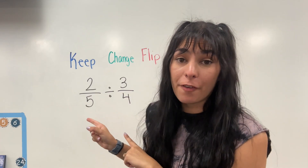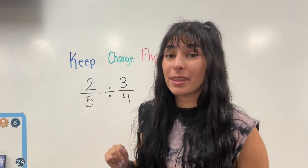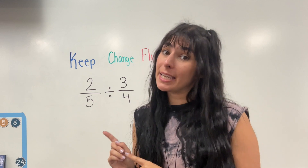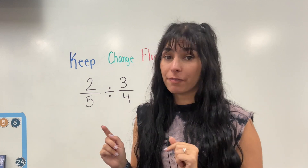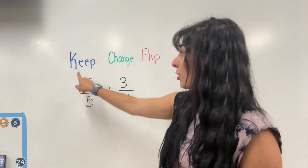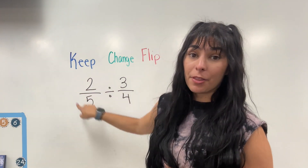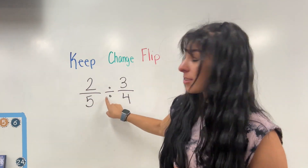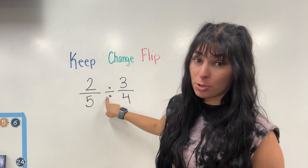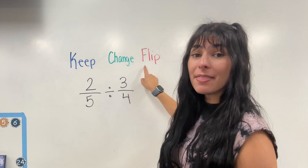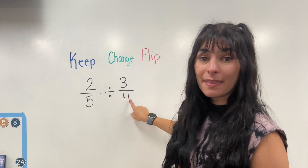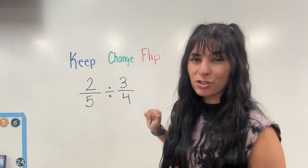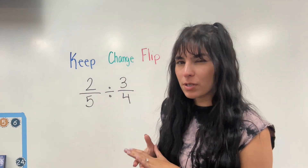When we are dividing fractions, the most important thing to remember is keep, change, flip. We're going to keep the first number, change the division to multiplication, and then flip that last fraction, meaning finding our reciprocal.